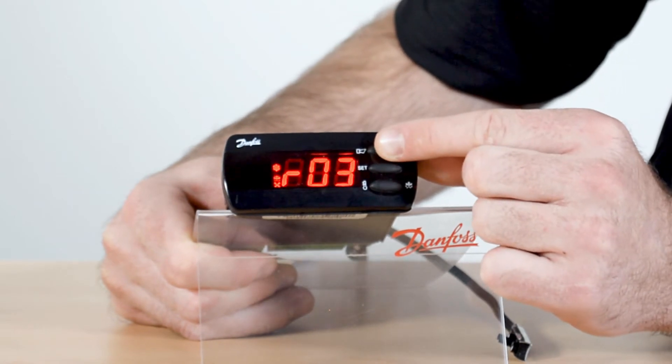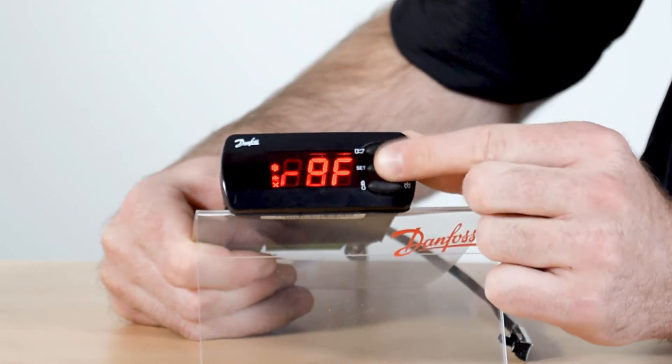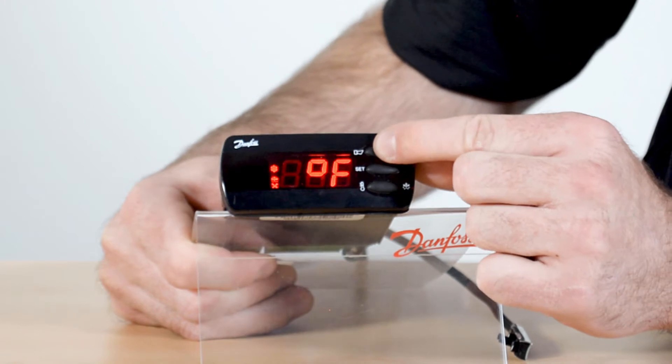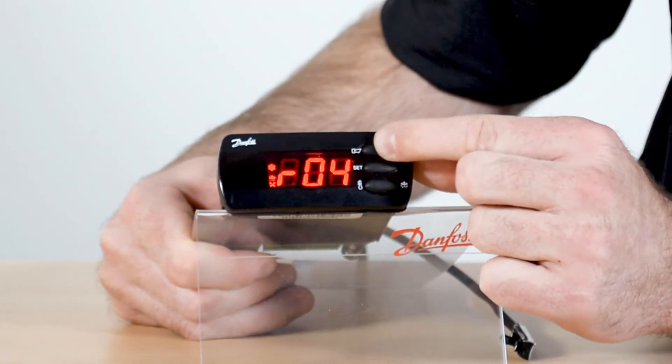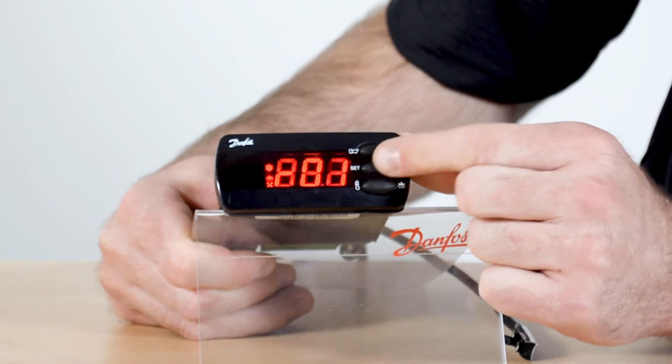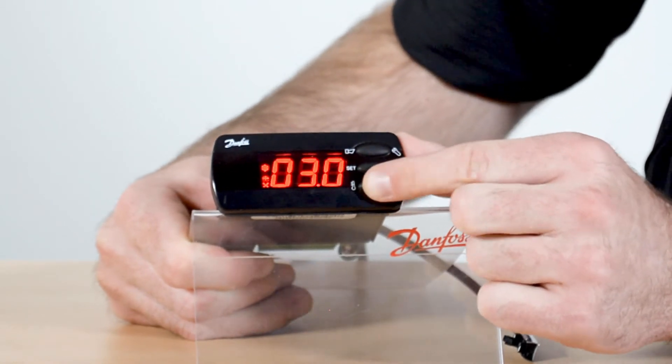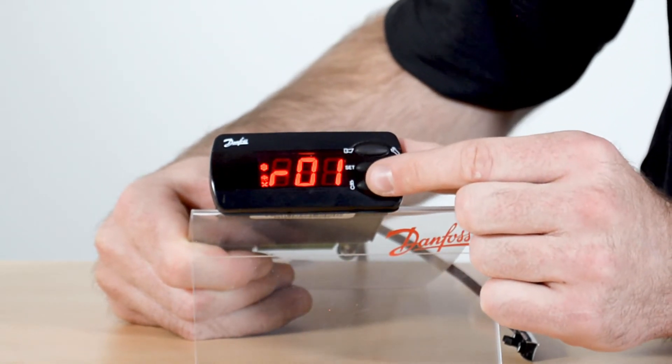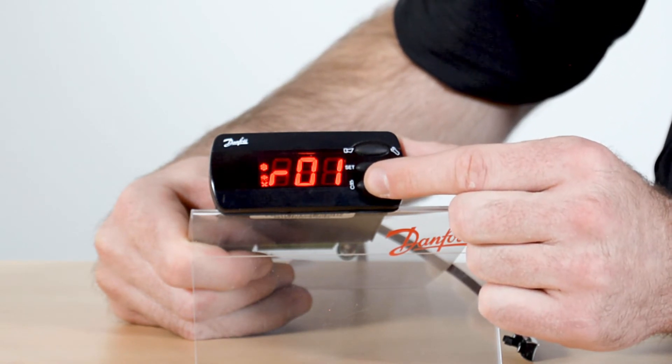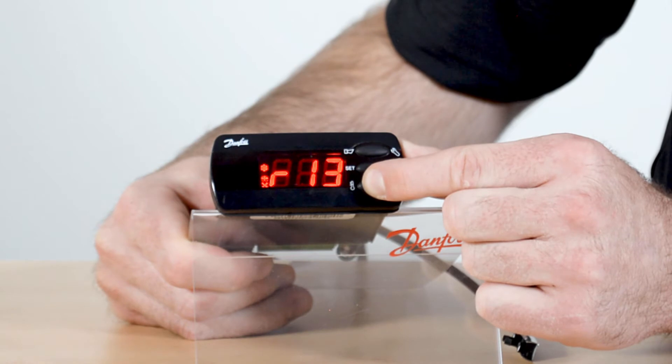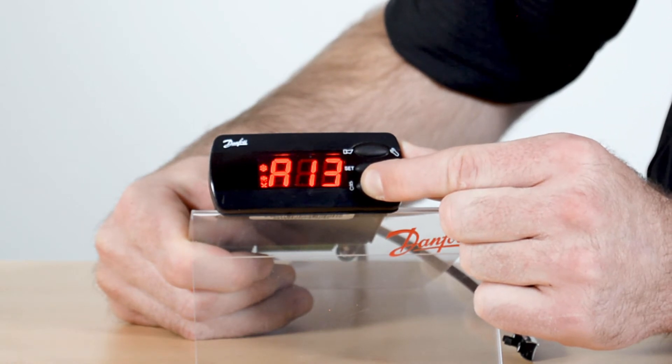Next we go back to the R05 parameter and we set our units, so you can either be in Celsius or Fahrenheit. Next go to R01 which is your differential so you set your desired differential, and then from there we're going to go down to the O61 which is the application which configures our relays.